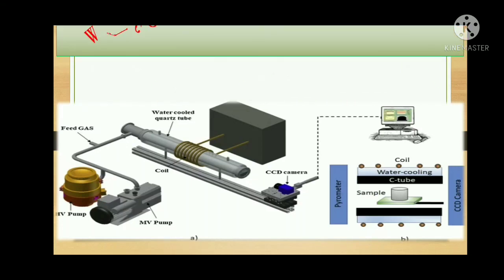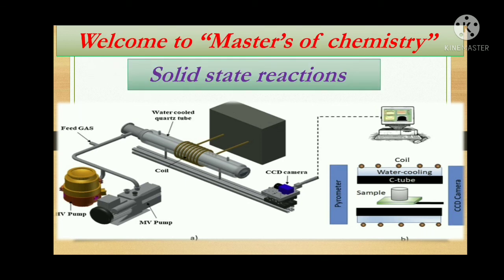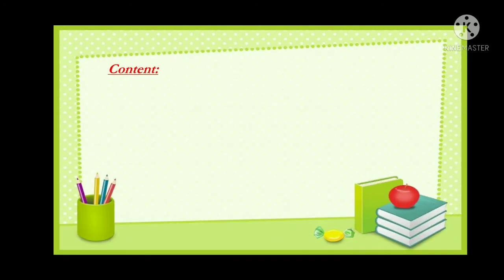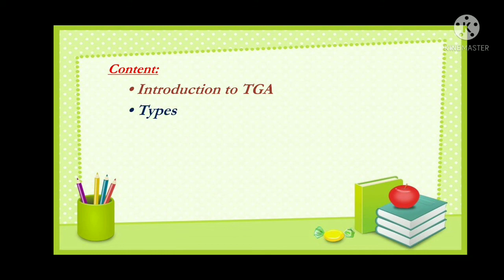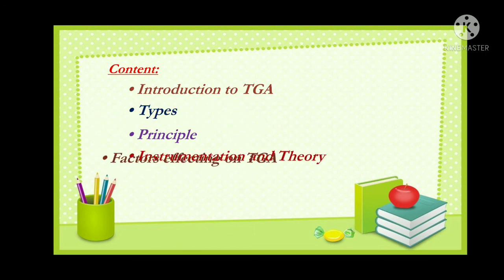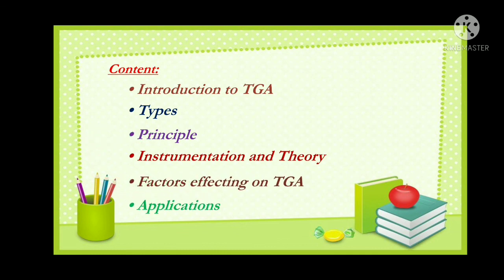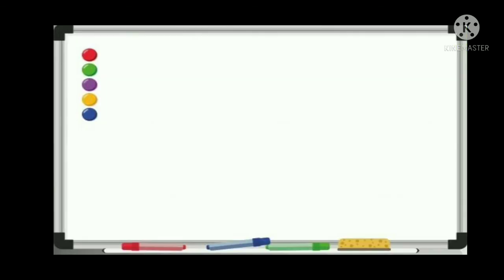Hi friends, welcome back to Masters of Chemistry. We are studying the solid state reaction from physical chemistry. In the previous video session we briefly introduced thermal analysis and its role in solid state reactions. In this particular video session we are going to deal with one method of thermal analysis — thermogravimetric analysis, or TGA. Today's video will cover: general introduction to TGA, classification of TGA, principle, factors affecting TGA, instrumentation, and applications.